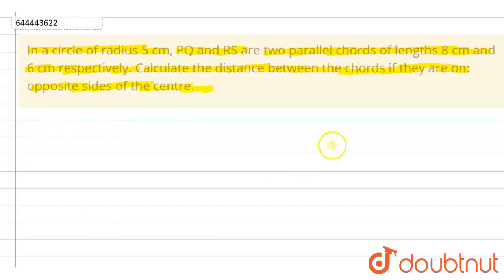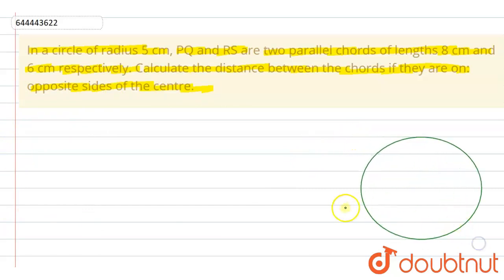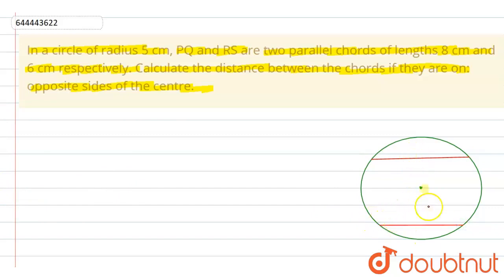This is the circle and this is the center of the circle. We have two parallel chords which are on the opposite sides of the center, because this is center O. This chord is called PQ and this one is called RS.